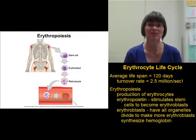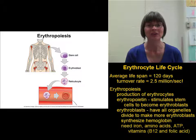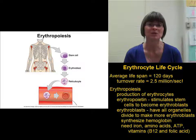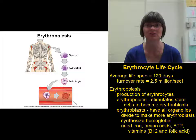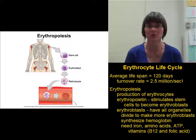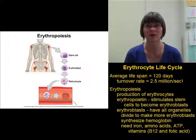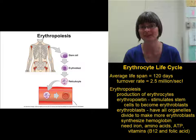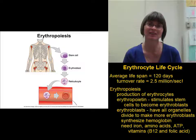This process requires a lot of resources. You need iron to make hemoglobin, amino acids to make the protein portion of hemoglobin, and folic acid and vitamin B12, which are important for cell division. You also need a lot of ATP for protein synthesis and cell division. If you don't have those resources, you won't make enough erythrocytes, which can lead to anemia.